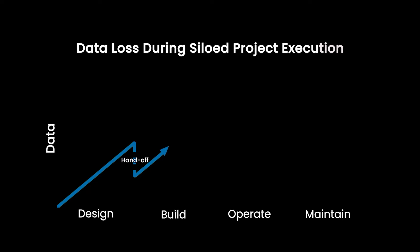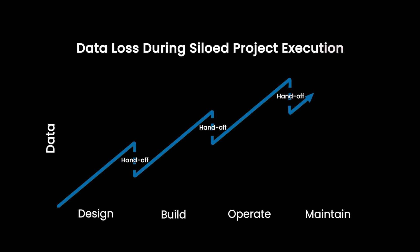And then constructing, and then we deliver, and we go to operations. And every time we do that, there is a data loss — there's a lot of data that gets lost in that handover. And I think one of the very good emerging use cases for digital twins is that there is a continuity in that cycle.